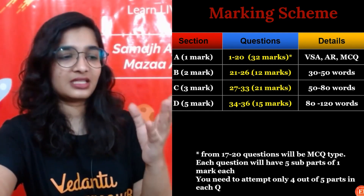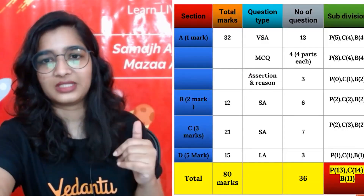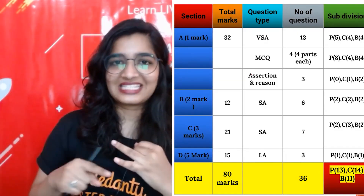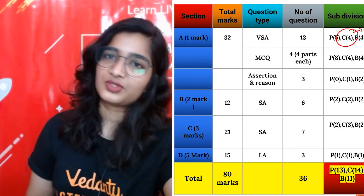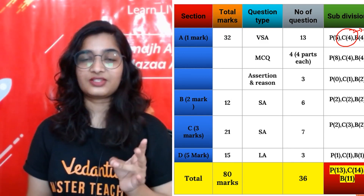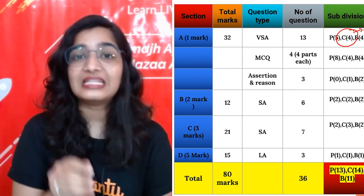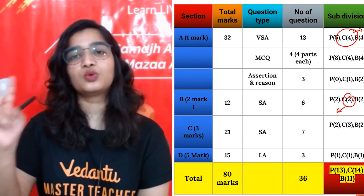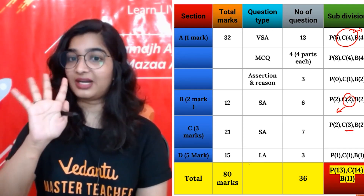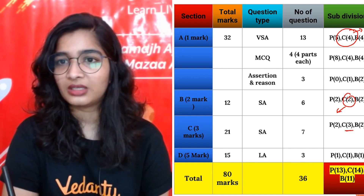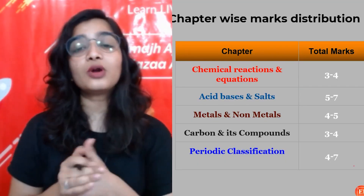In Section D, questions 34, 35, and 36 are five marks each — one from each branch: Biology, Physics, and Chemistry. Our main focus is on Chemistry. In Section A, four questions will be from Chemistry — VSA, MCQ, and assertion-reasoning types, with four parts each. In Section B, two questions from Chemistry; in Section C, three questions; and in Section D, one five-mark question from Chemistry. So total, around 14 to 15 questions from Chemistry.